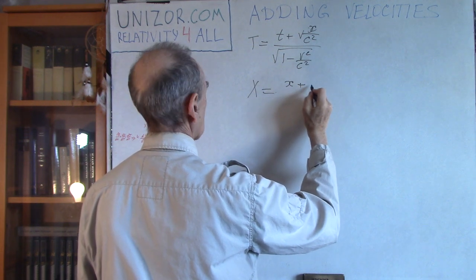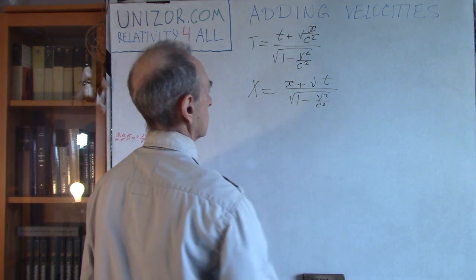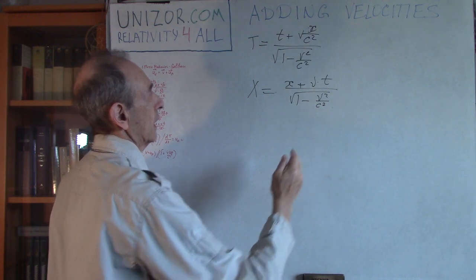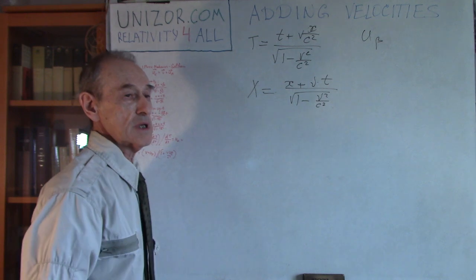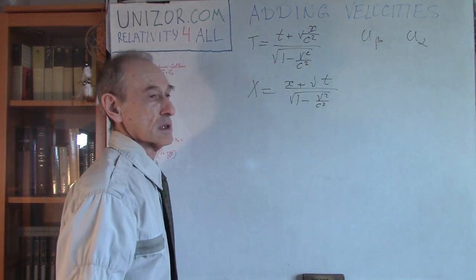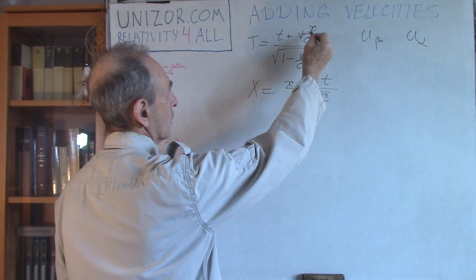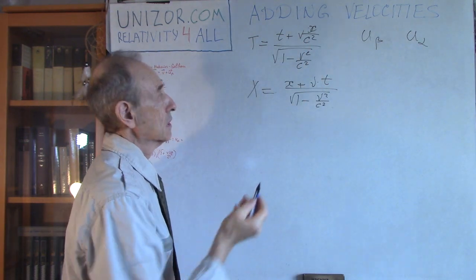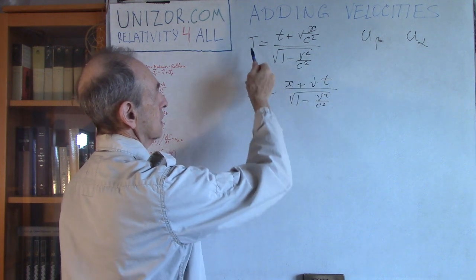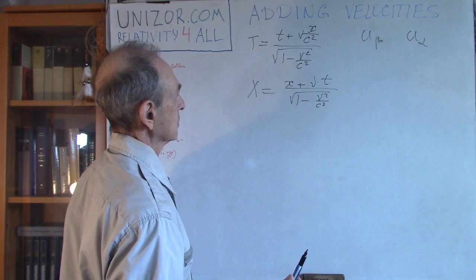u_beta would be the speed of the person relative to platform, and u_alpha means speed relative to the earth. Let me write the second equation. I'm only talking about movement relative to the x-axis, just to simplify the number of variables. So no y's, no z's, only x and time t. For x it will be (x + vt) divided by the same square root of 1 minus v squared divided by c squared. c is the speed of light, v is the speed of beta platform relative to alpha platform. Lowercase x, lowercase t are coordinates in the beta system, and capital T and X are in the alpha system.